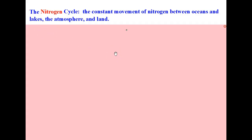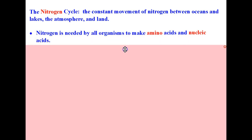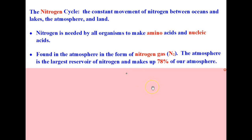Next we'll discuss the nitrogen cycle. The nitrogen cycle is the constant movement of nitrogen between the oceans, lakes, the atmosphere, and land. Nitrogen is needed by all organisms to make amino acids and nucleic acids. Nitrogen is found in the atmosphere as nitrogen gas, also called N2. The atmosphere is the largest reservoir of nitrogen, making up 78% of our atmosphere. Many students assume oxygen is the primary atmospheric gas, but nitrogen makes up 78% while oxygen makes up only 21%.